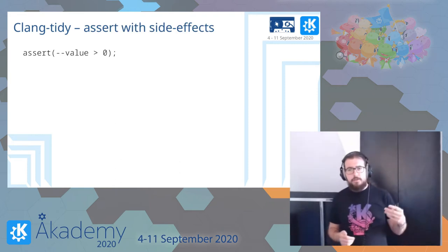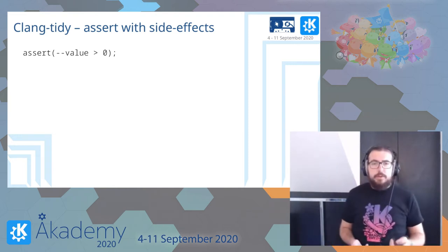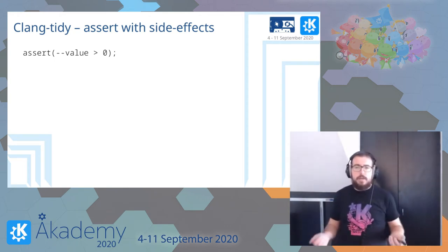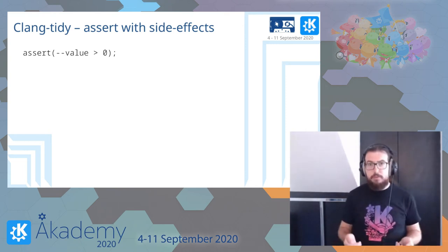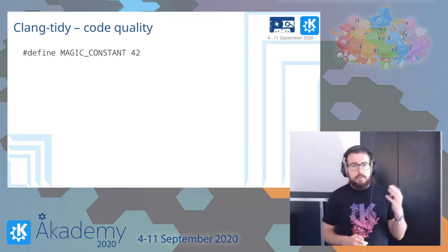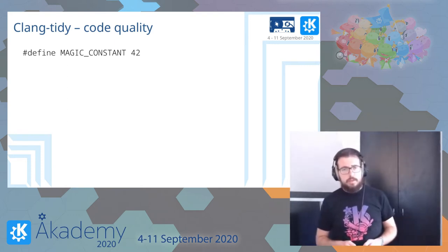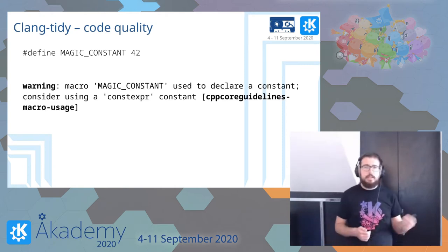The other static analyzer I want to talk about is Clang-Tidy. Clang-Tidy is part of the LLVM project, so it's actually developed as part of the Clang compiler — you get it alongside the compiler with other Clang tools. It has a wide range of generic C++ checks. For example, it can detect bug-prone statements: when you compile without asserts, a decrement inside an assert will not happen anymore because the compiler removes the whole line. Clang-Tidy will also help with code quality — for instance, replacing a magical constant defined as a macro with constexpr, which is exactly the same but type safe.